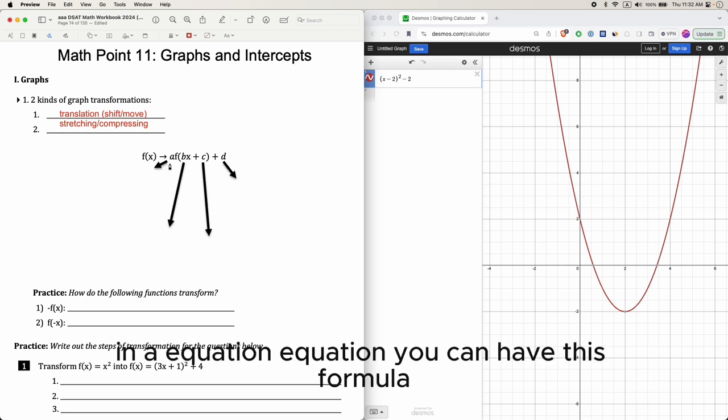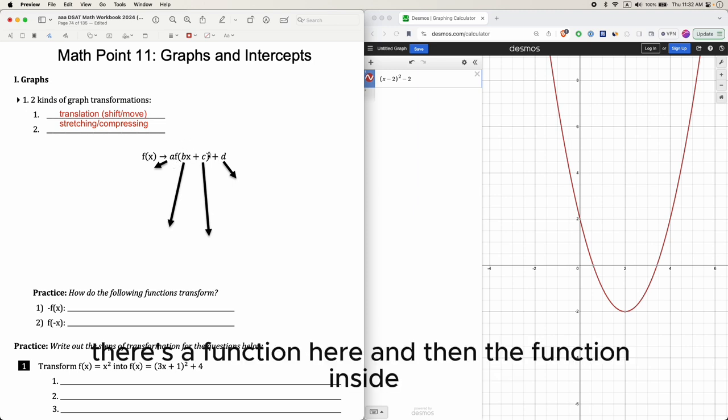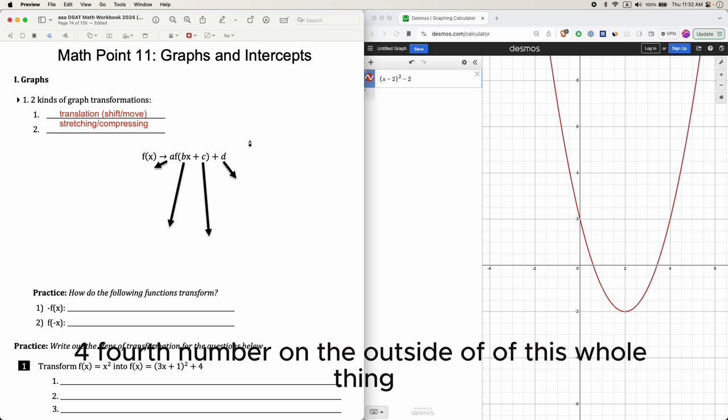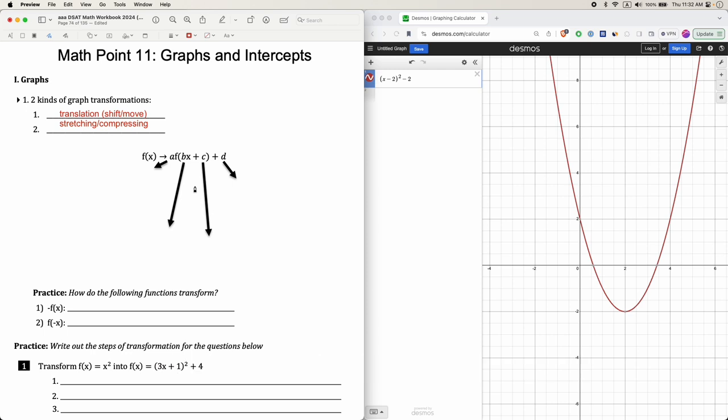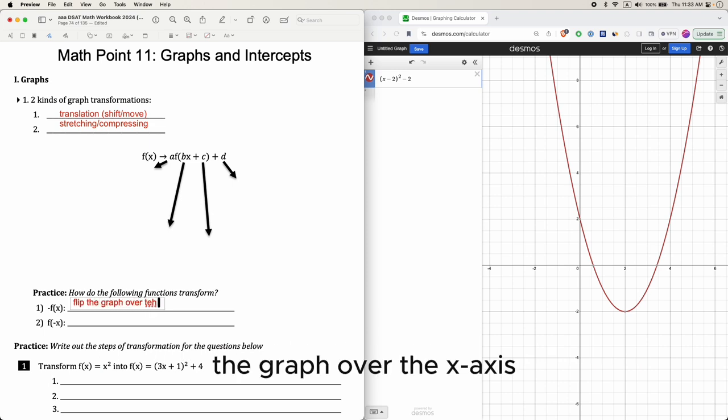In an equation, you can have this formula. The a is the magnitude. There's a function here, and then the function inside there could be a coefficient next to the x, or another number here. Or there's a fourth number on the outside of this whole thing. But without going into so much detail, we can just graph it on the calculator and take a look at it. You're supposed to learn in your math class that if you have a function and you have a minus in the front, then this would flip the graph over the x-axis.